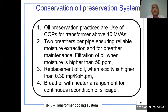Conservator oil preservation practices are used for transformers almost above 10 MVA, with breather pipes ensuring reliability. Key maintenance thresholds include: moisture filtration of oil when moisture is higher than 50 ppm, and replacement of oil when acidity is higher than 0.3 mg KOH per gram. A breather with heater arrangement allows for continuous reconditioning of the silica gel.